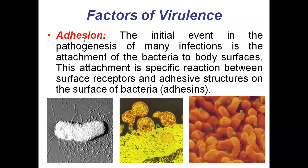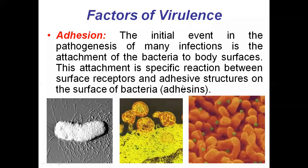This attachment process is called adhesion, and this adhesion or attachment is a specific reaction between the surface receptors and the adhesive structures which are present on the surface of bacteria. These adhesive structures are called adhesins. These surface receptors are present on the cell surface of the host organism.